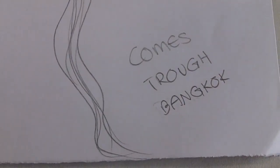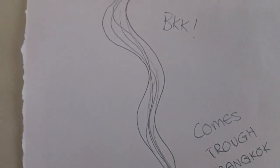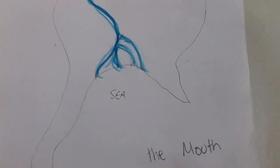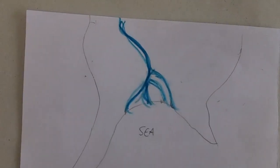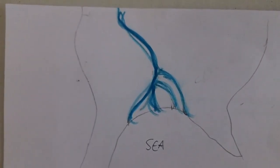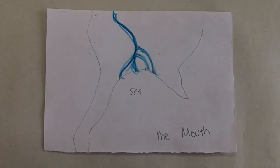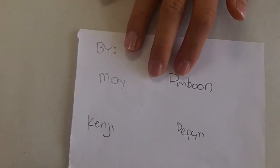Here it comes to Bangkok. And here it goes to the sea, where there should usually be a delta. But there's no delta because humans have actually taken it away so it doesn't flood the land. That area is also called the mouth.